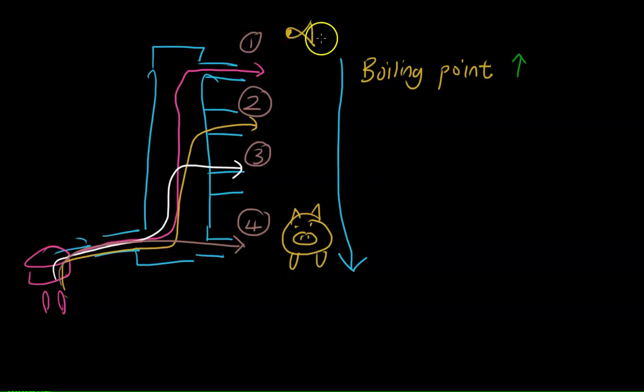As we move down this column, the boiling point increases. Makes sense - remember our fish example. Fish should be at the top whereas a pig will be at the bottom because it's heavier. Down the column, the boiling point increases. This will be very low, but down the group viscosity will increase.